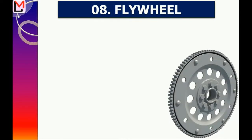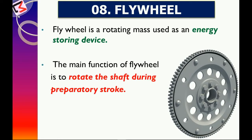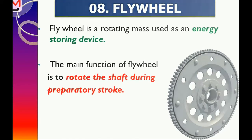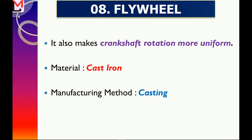Now we will learn about the flywheel. It is a rotating mass used as an energy-storing device. The main function of the flywheel is to rotate the shaft during the preparatory stroke, and it also makes the rotation of the crankshaft more uniform. Cast iron is used to make the flywheel, and the manufacturing method used is casting.